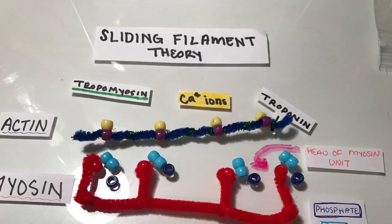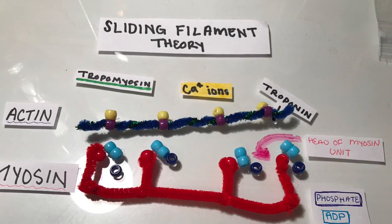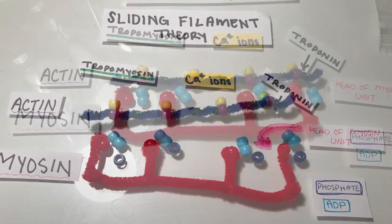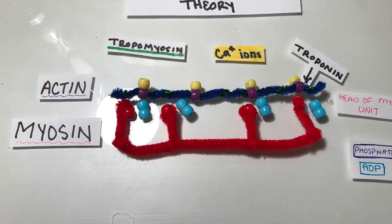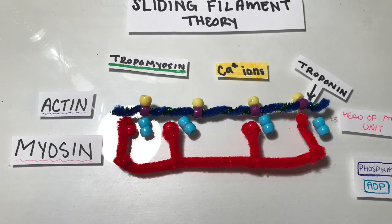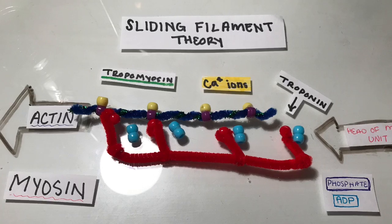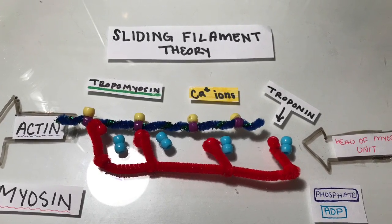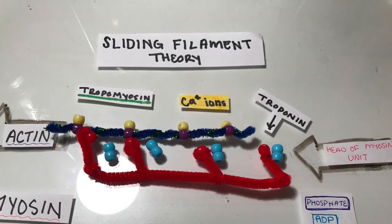The head of each myosin unit is bound to an ADP and phosphate molecule, remaining from the previous muscle contraction. The head releases the phosphate molecule and binds to the newly exposed myosin binding site on the actin. The two filaments glide past each other, propelled by a head-first movement of the myosin units powered by the chemical energy stored in their heads.